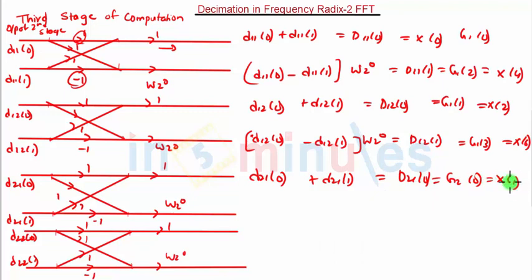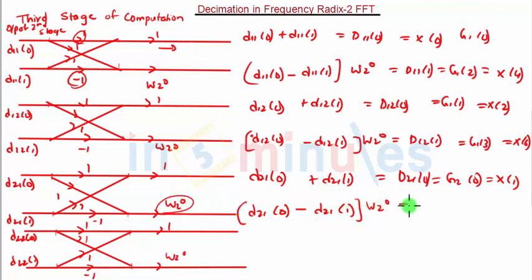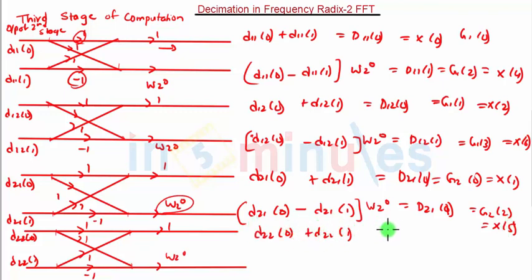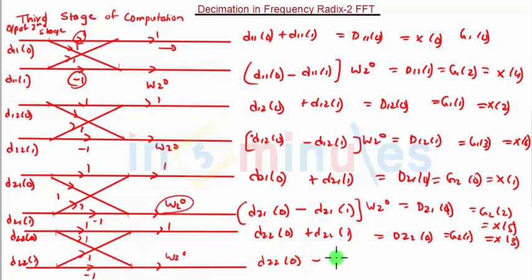Note that at the output side the order is bit-reversed, so be careful. It is exactly the opposite of the natural order. Continuing: d21 of 0 minus d21 of 1 multiplied by W2 raised to 0 gives x of 5, equal to g2 of 2. Then d22 of 0 plus d21 of 1 equals x of 3, equal to g2 of 1. Finally, d22 of 0 minus d22 of 1 gives d22 of 1, equal to g2 of 3, which is x of 7.